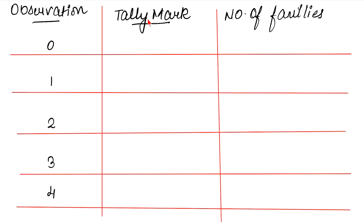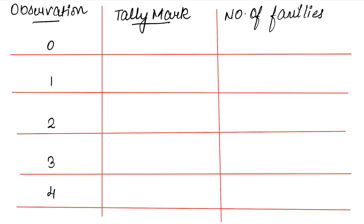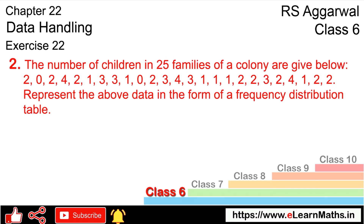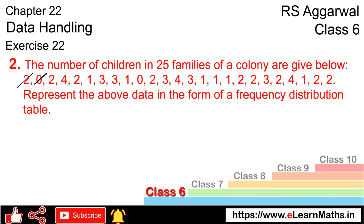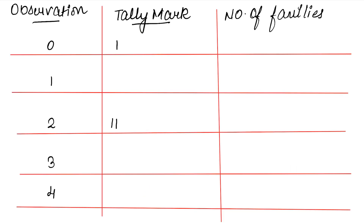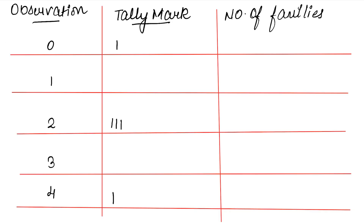For the tally mark column, we go through each observation value. As we look at each data point, we put a stick (tally mark) against the matching observation. For example, we draw a stick for 2, then for 4, continuing through all the data.